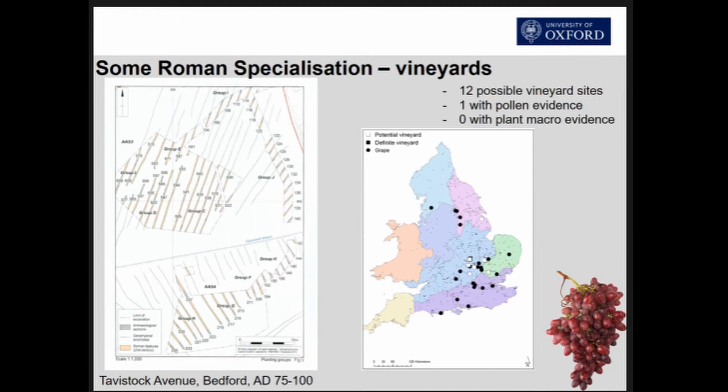Into the Roman period, we do have some evidence for fruit crops and viticulture. There are about 10 sites now in the central midlands where we have some evidence for vineyards — one of them has good pollen evidence, the others are a little more dubious — but on the whole it seems to be a kind of failed short-term experiment, and it's really only cereals that remain the main crop in this period.